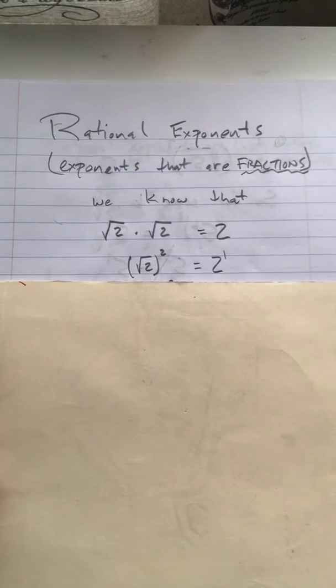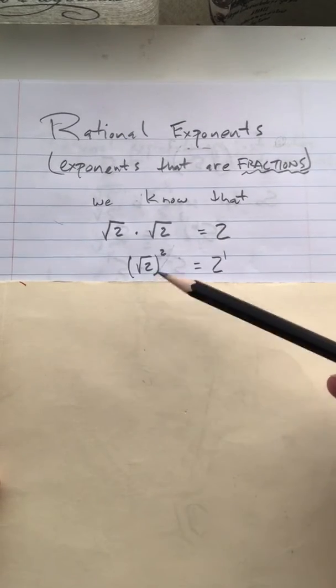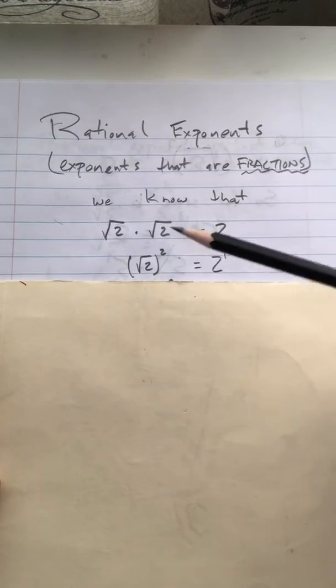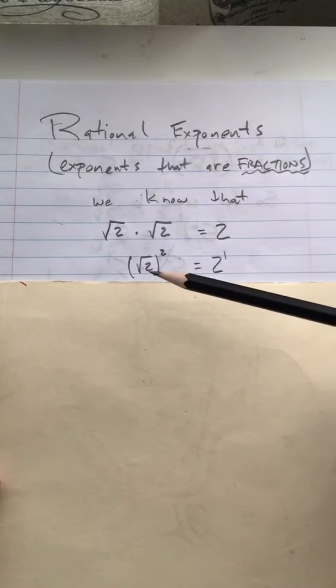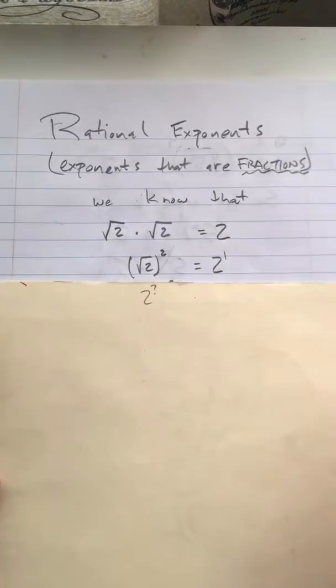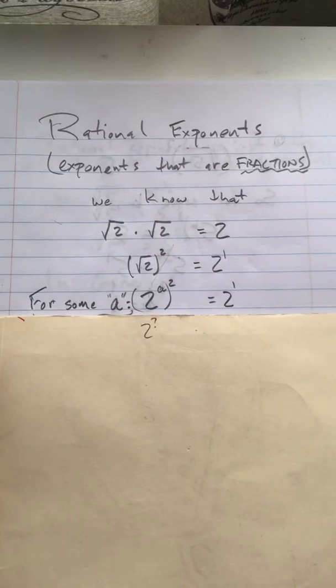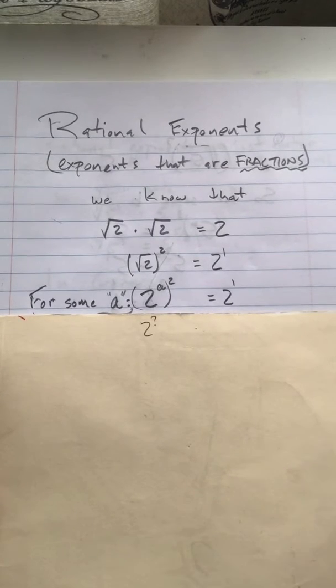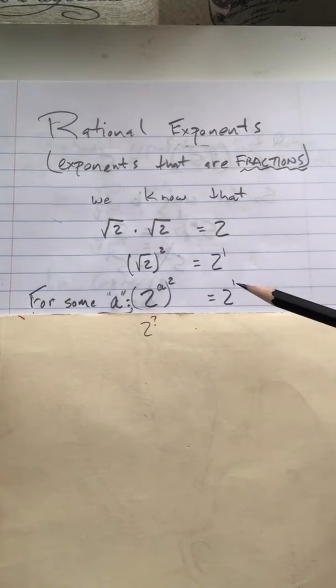So, what if there was some number that I could take 2 and raise it to the power of that number and have it equal the square root of 2? In other words, what I'm looking for is a way to replace this radical 2 with 2 to the sum power, 2 to the sum exponent. Alright, so let's say that there is a number a that I can raise 2 to, 2 to the a power, and then when I square that, 2 to the a squared, it gives me 2 to the first power.